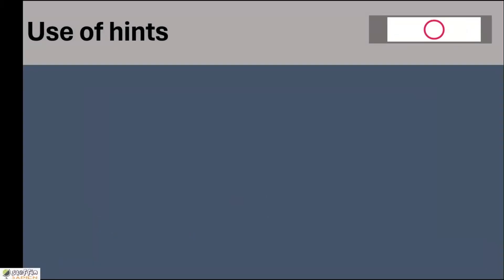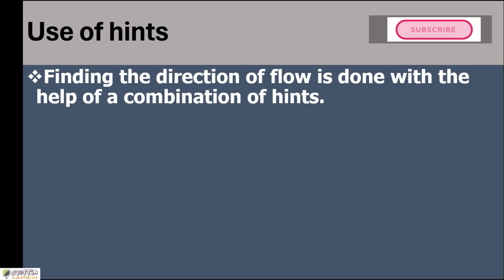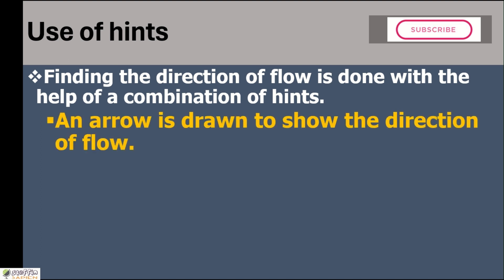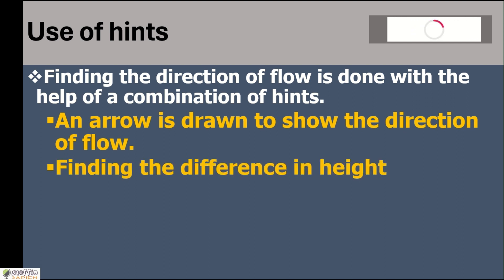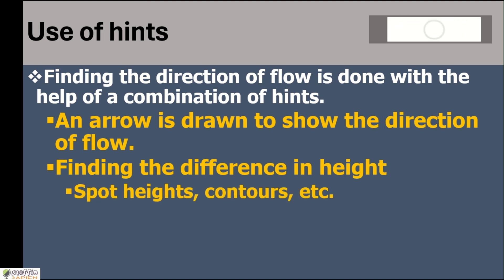How do we identify the direction of flow? We have to depend on certain clues and hints available on the map. There are a large number of combinations of hints on a map. If an arrow is drawn on large rivers to show the direction of flow, once you get the arrow showing the direction, you follow that river and find its direction anywhere on the map. But in certain cases, arrows are not available — then we find the height difference in two different parts of a river. For this we depend on height features like benchmarks, spot heights or triangulated heights.